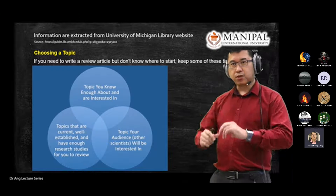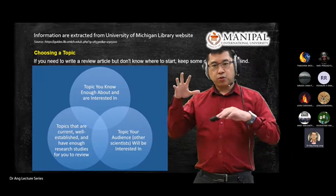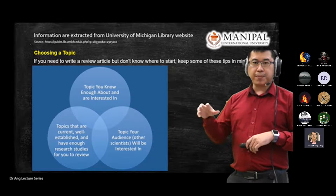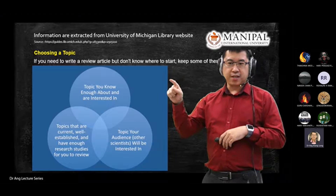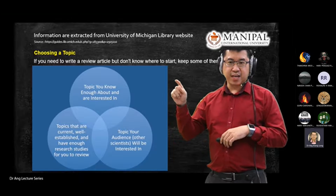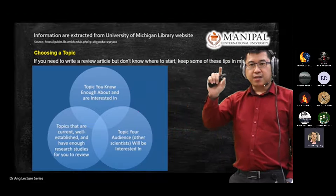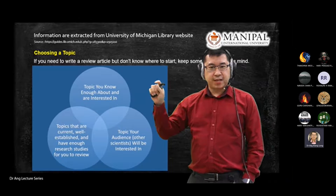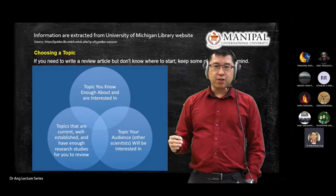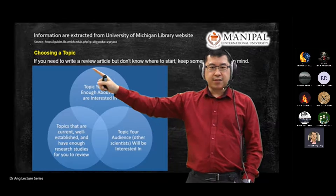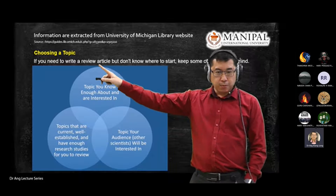After you decide on a topic, go to Google Scholar — G-O-O-G-L-E Scholar — and type in the keyword of your topic. See how many people have already published papers or publications on that particular topic. From there you'll know whether there's enough literature. That's the first thing that will help you write your report later on.